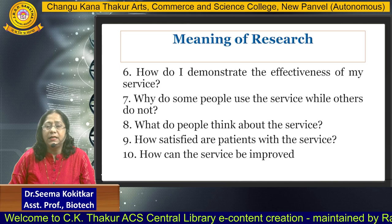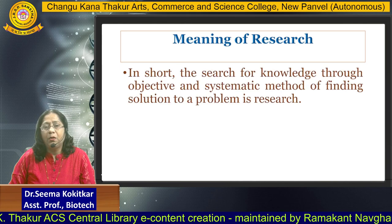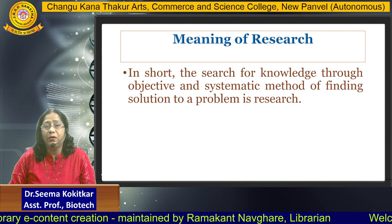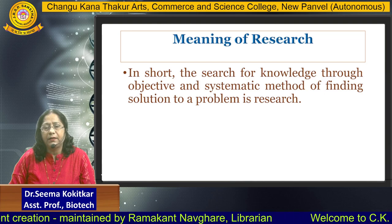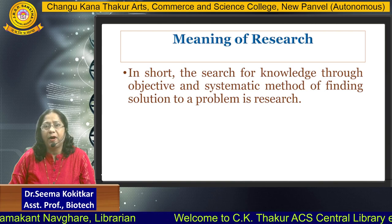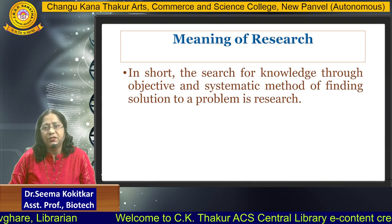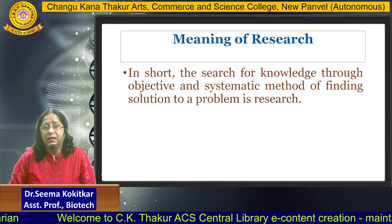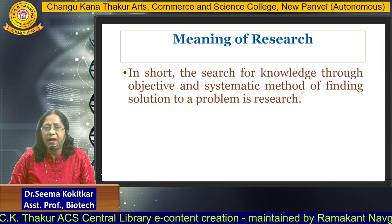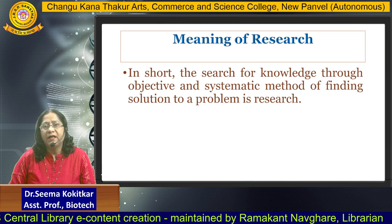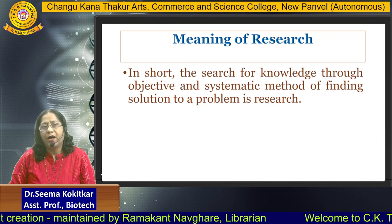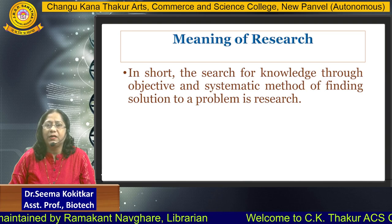So this is a very good example of research. In summary: the search for knowledge through an objective and systematic method of finding solutions to a problem is basically research. First we identify a problem, then set objectives for how to proceed, use systematic methods, and ultimately find the solution. That is research — I hope you understood the concept of what is the meaning of research.